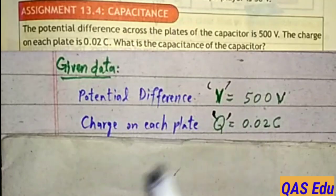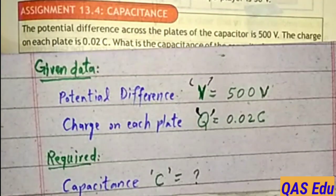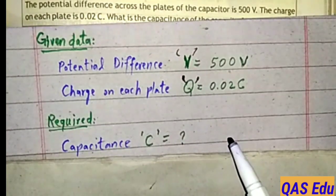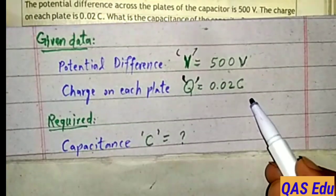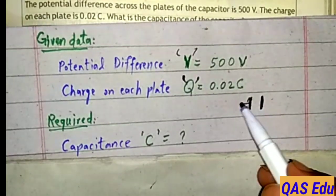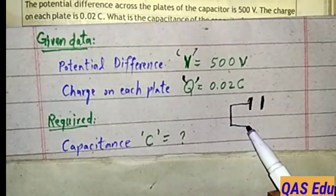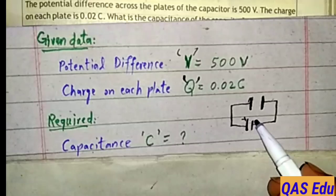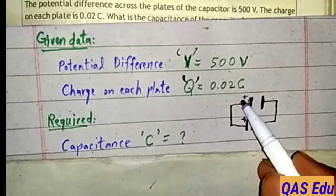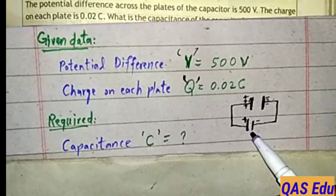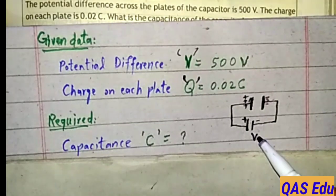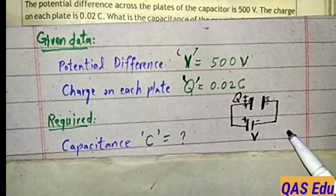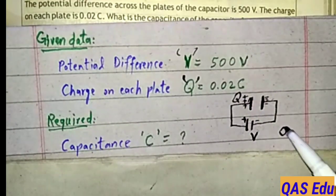Required is capacitance. Let's suppose there's a parallel plate capacitor connected to a battery or power source. Positive terminal, negative terminal. There's charge, there's voltage. The charge is directly proportional to voltage.